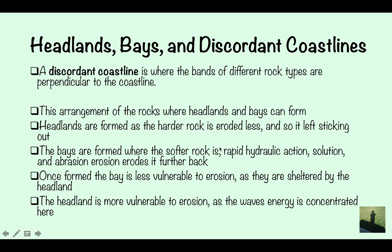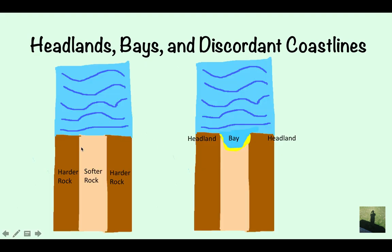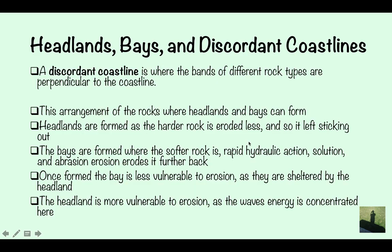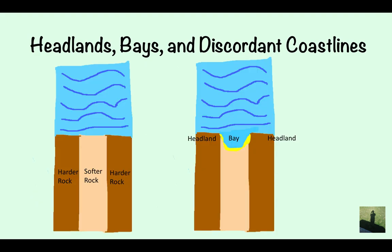Headlands are formed as the harder rock has eroded less and is left sticking out. The softer rock is eroded further back, while the harder rock is left as a headland. The headland is now more vulnerable to erosion as wave energy is concentrated there. If the headland is eroded back far enough, it will form another bay as the softer rock beneath is eroded.